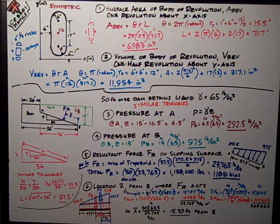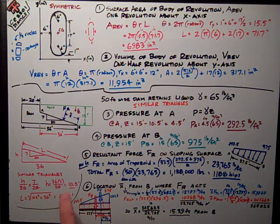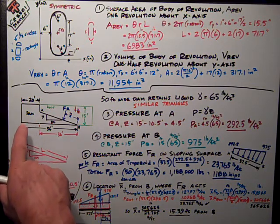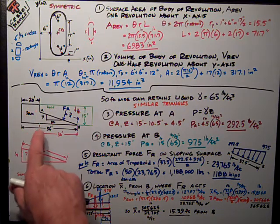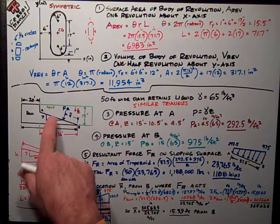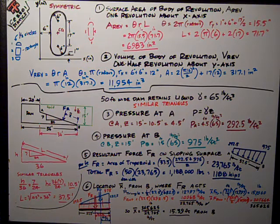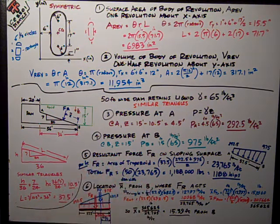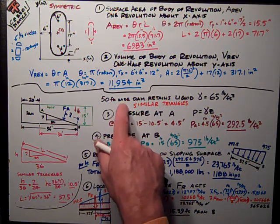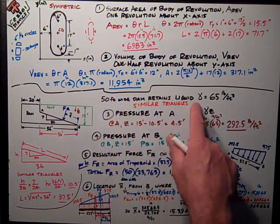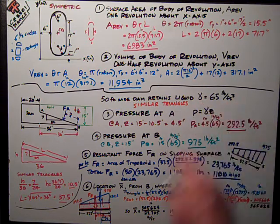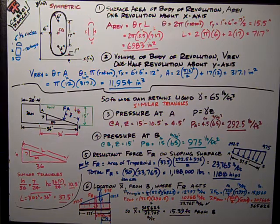The second problem was a fluid pressure problem. I had a dam with some dimensions given. The slope of the sloping surface is a 7-24, which means hypotenuse is 25. I was told that the dam is 50 feet wide, which comes into play in my answer. And it retains a liquid with a specific weight of 65 pounds per cubic foot.